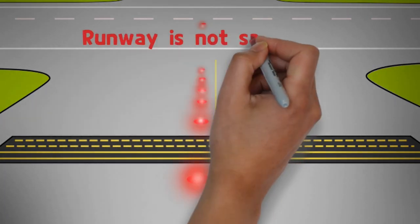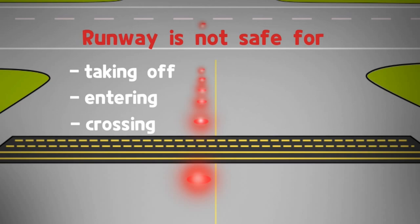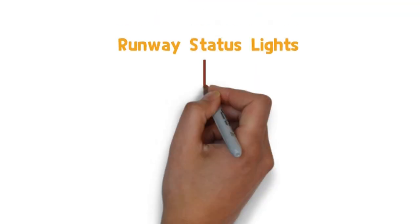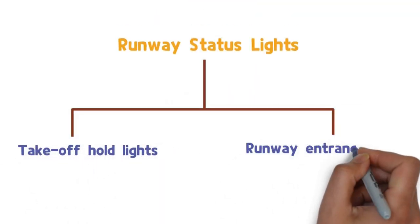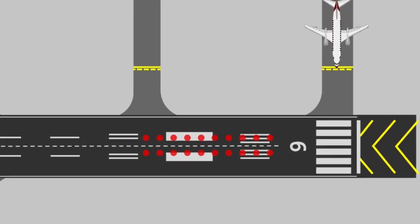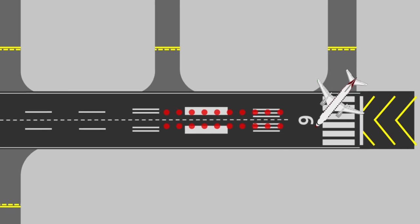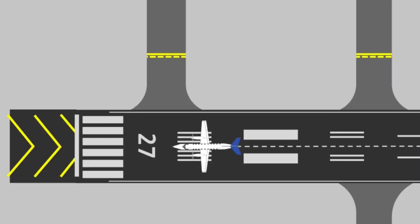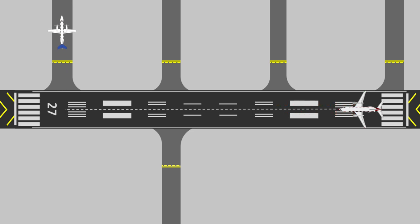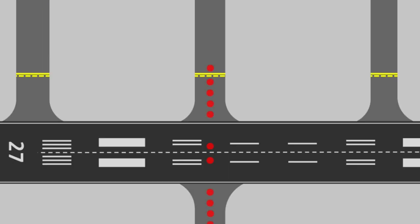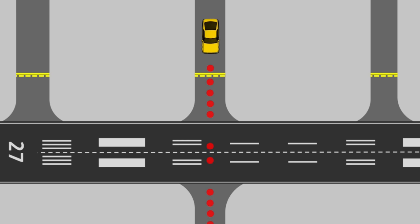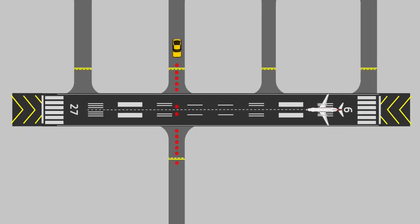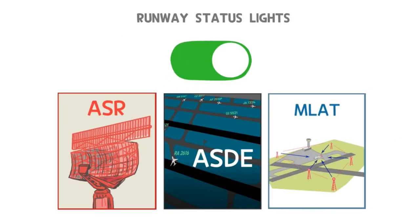It prevents runway incursion caused by mistakes of controllers and pilots in advance by visually letting the pilot know the situation that the current runway is not safe for taking off, entering, and crossing. The runway status light system consists of two types: take off hold lights and runway entrance lights. Take off hold lights alert the pilot on the runway waiting for takeoff by way of red lights on when other aircraft or vehicles are on the runway. Runway entrance lights indicate the runway is currently occupied for departing or landing, signaling the pilot and vehicle to hold short of the runway. The system is automatically operated with information acquired from connecting ASR, ASDE, and MLAT.